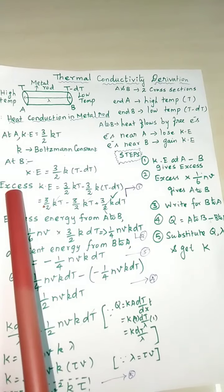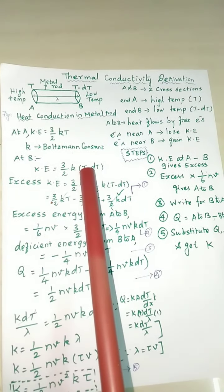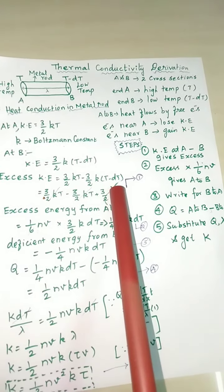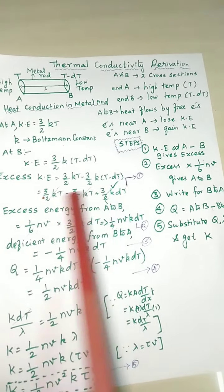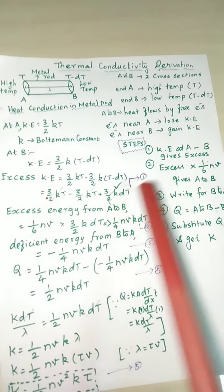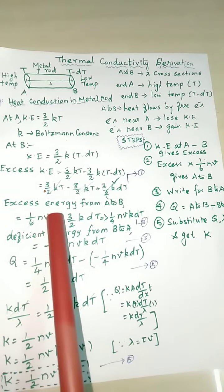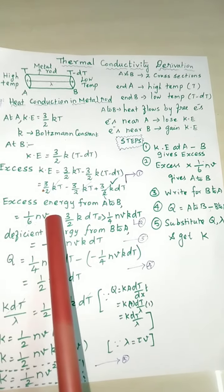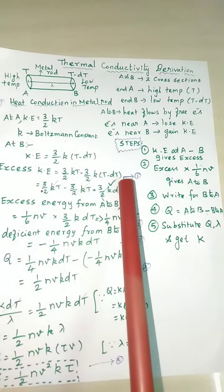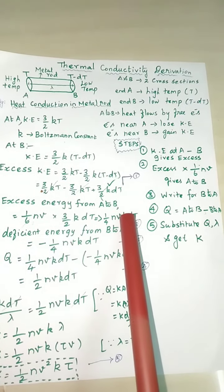Excess energy - first equation minus second equation. Result: terms cancel. The excess energy is from current heat conduction and velocity: 1 by 6 NV gives final product 1 by 4 NVkDT. This is A to B.